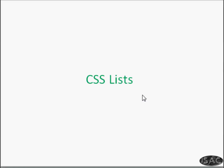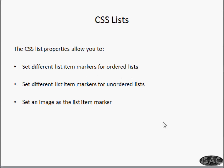To really understand lists — as we know, we have ordered list and unordered list in HTML. There are tags like ol and ul, and then we use li tags inside that. Let us understand how to give a style to lists using CSS. The CSS list properties allow you to set different list item markers for ordered lists and unordered lists.